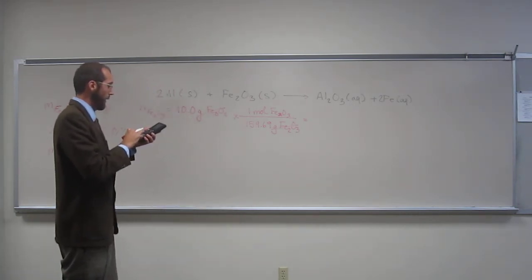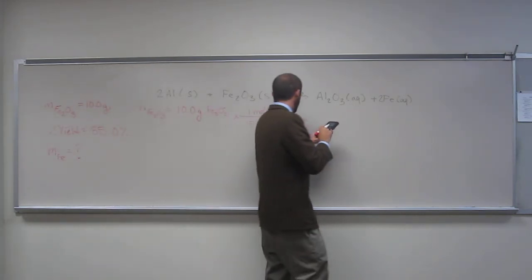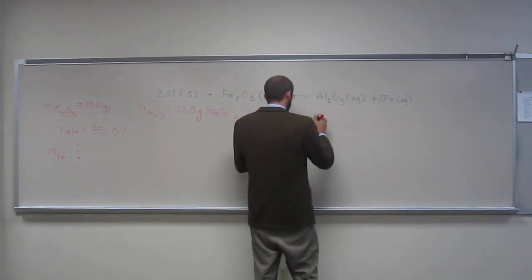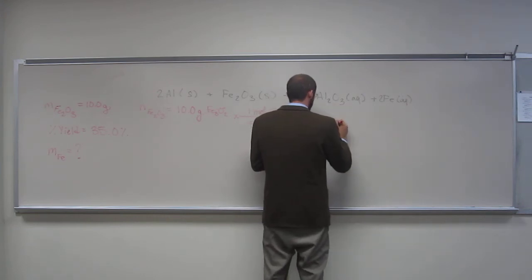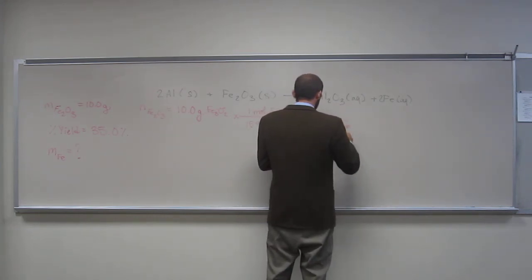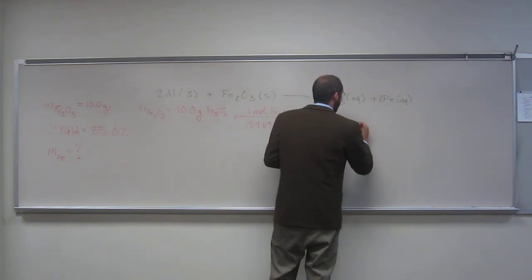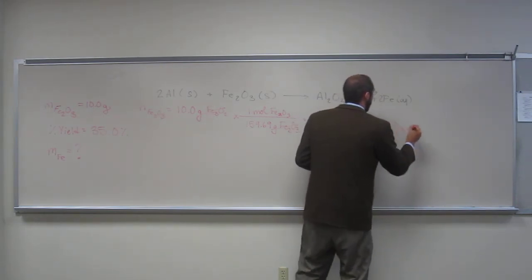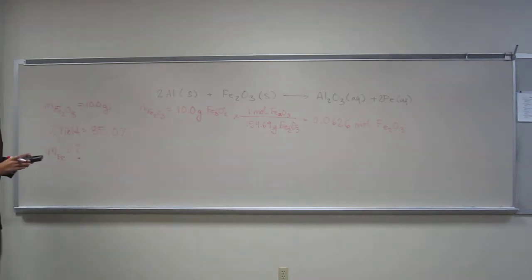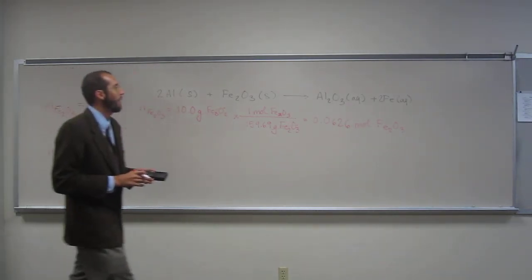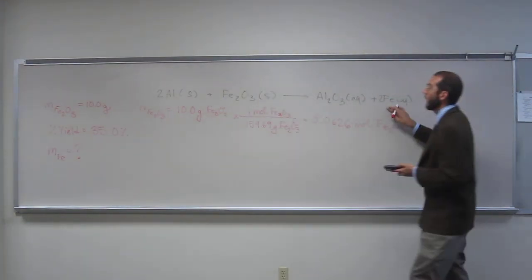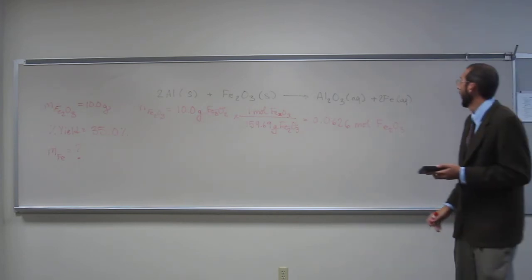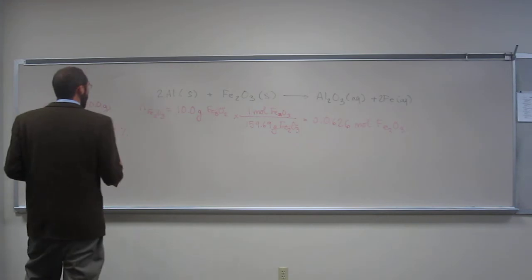And we've got now, so 10 divided by, well, we don't have to do this, but I'm going to, well, I'll just keep it like this, moles of Fe2O3. So what's the number of moles of iron that we should have made in this equation, or in this reaction if it all went to completion? How would we figure that out?